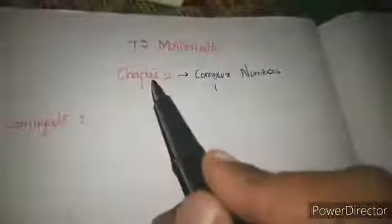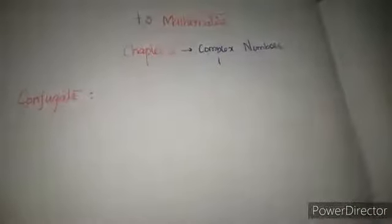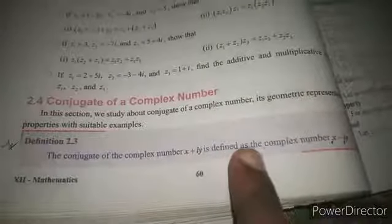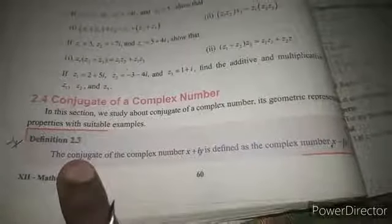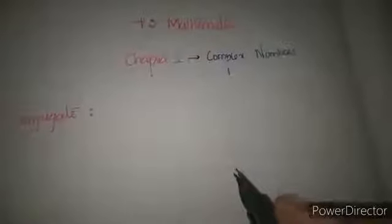Hello viewers, this is Maxson. Now I will teach about plus two mathematics, chapter number two, complex numbers. Today we have learned a new topic: conjugate. So what is meant by conjugate? The conjugate of the complex number x plus iy is defined as the complex number x minus iy. So x plus iy is our complex number, and in the conjugate form, x minus iy.